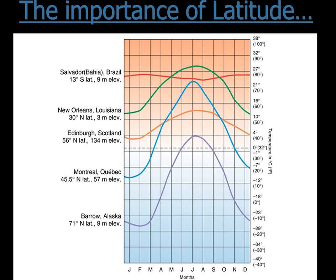Latitude: this diagram shows that if you're in Brazil, near the equator, you're roughly the same temperature throughout the year — the letters at the bottom refer to months. So near the equator you have no seasons. But as you head towards the poles you start to warm up in summer and cool off in winter. Scotland and Montreal show bigger swings, and Barrow, Alaska shows the largest. Generally, as you move away from the equator you cool off, and you get bigger extremes between summer and winter — you get seasons.